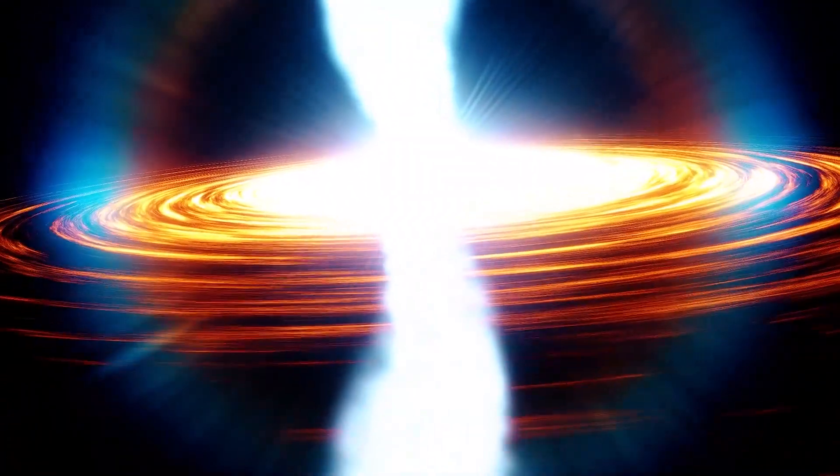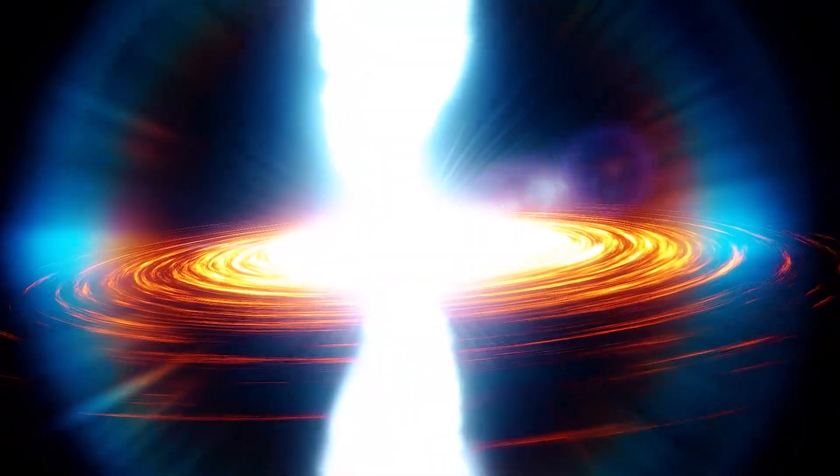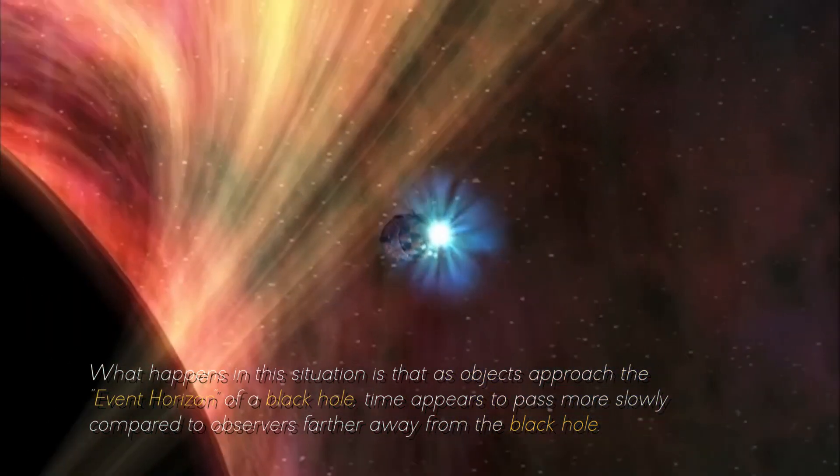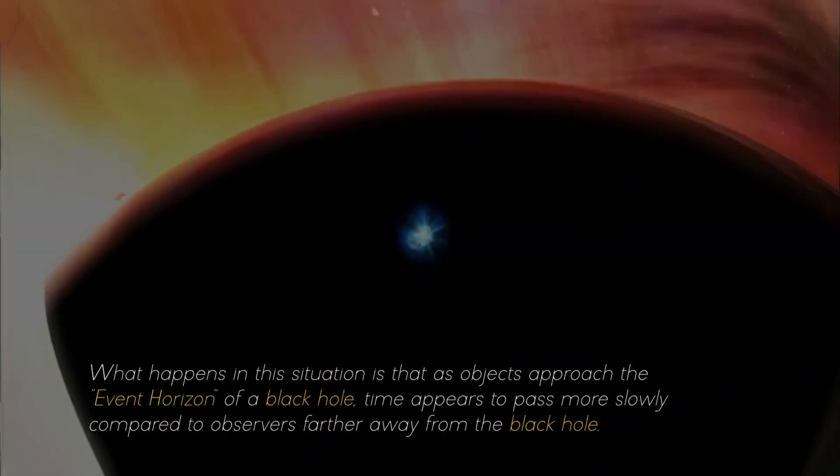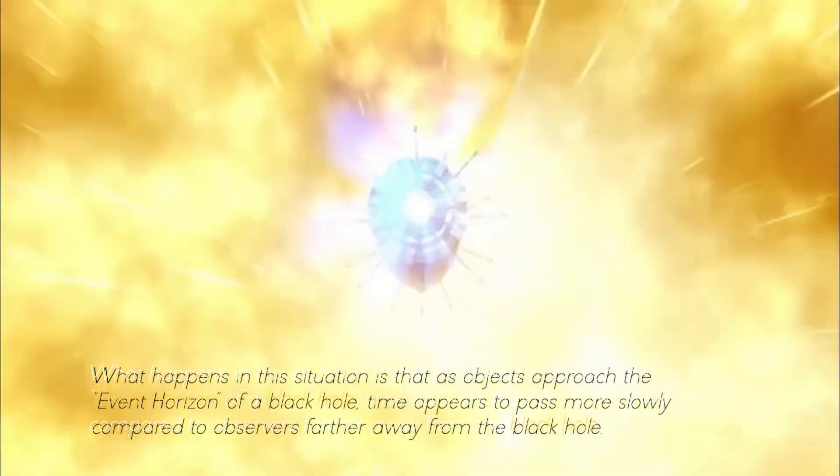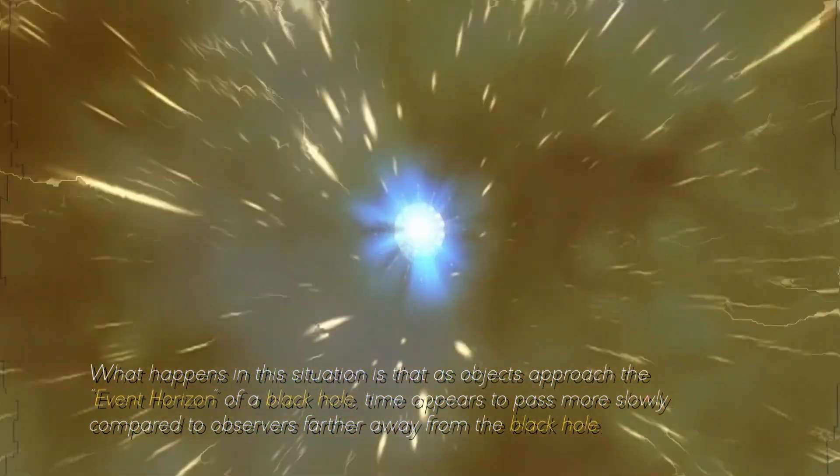But most surprising of all, the extreme gravitational attraction near a black hole gives rise to a phenomenon known as time dilation. What happens in this situation is that, as objects approach the event horizon of a black hole, time appears to pass more slowly compared to observers farther away from the black hole.